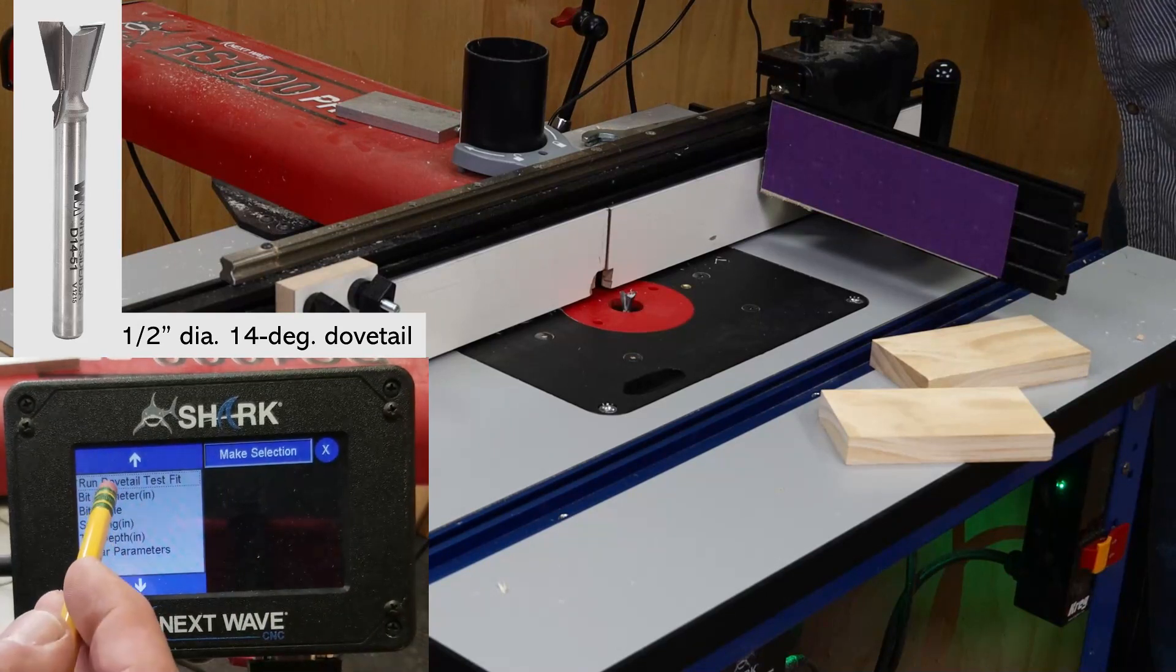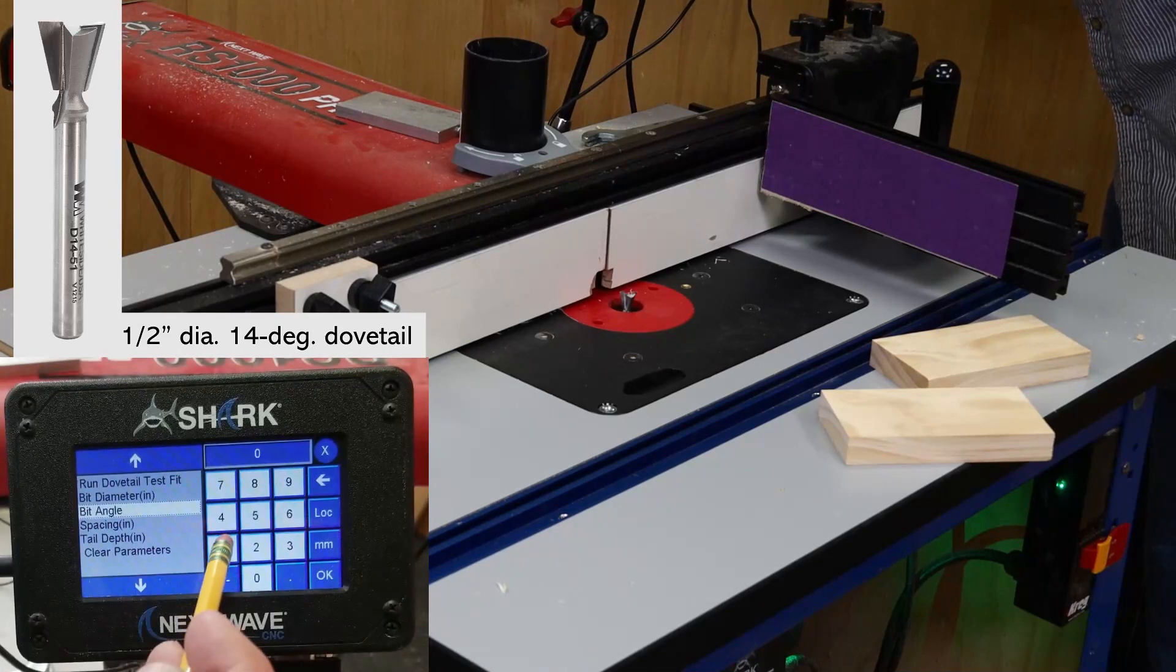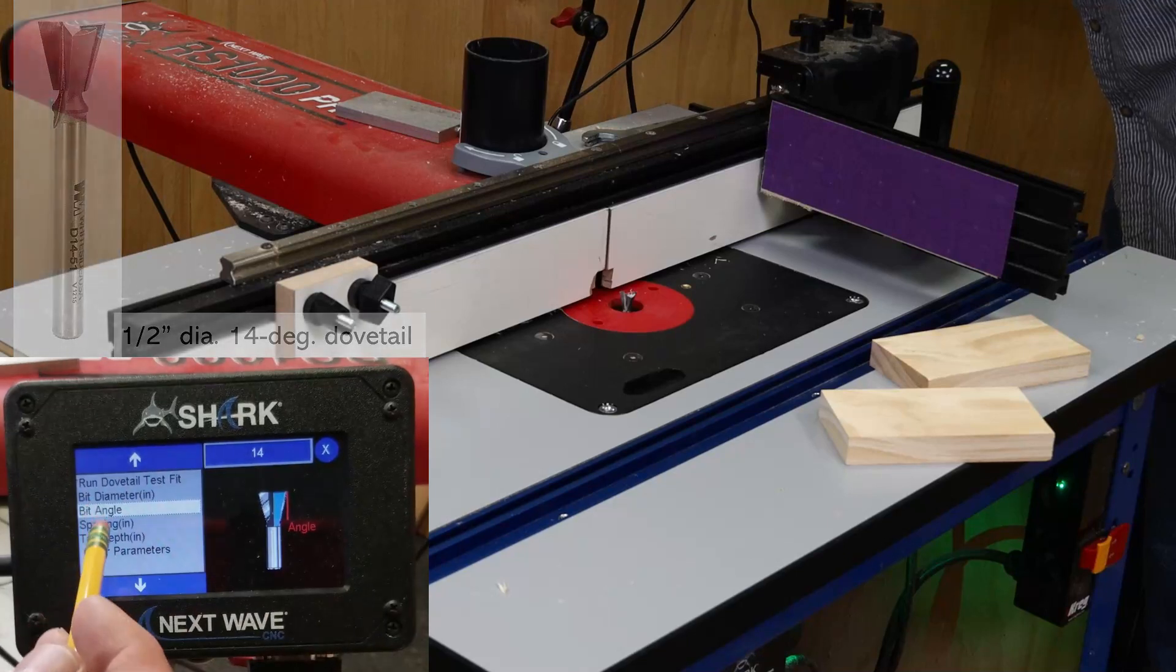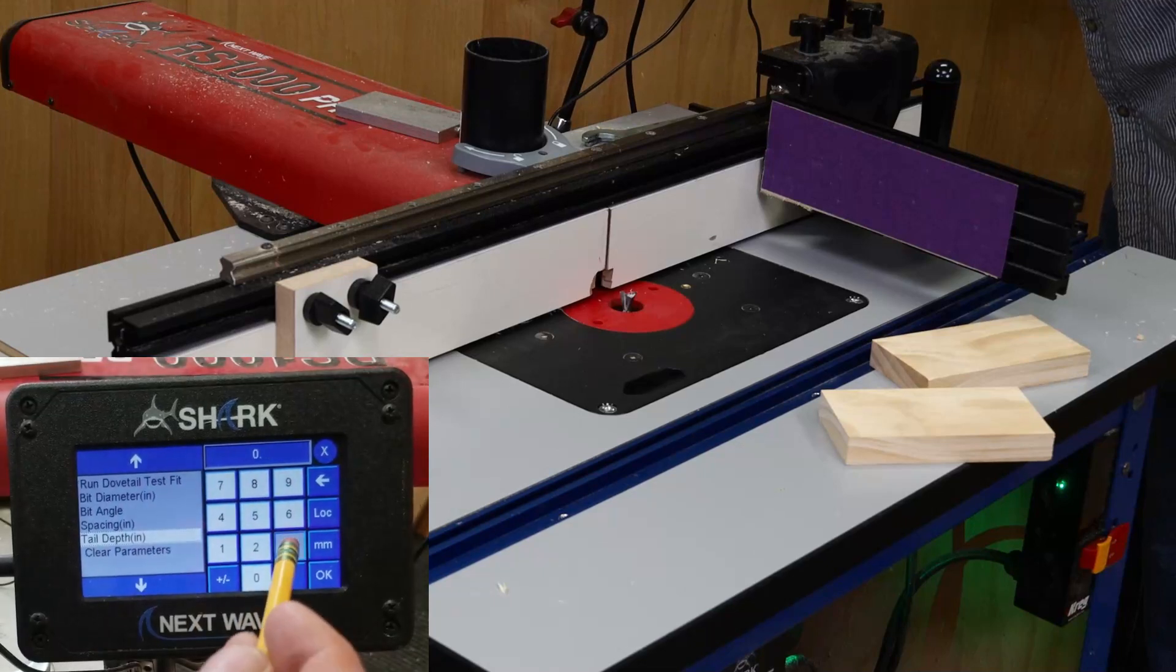I start by verifying the bit diameter, and then enter the bit angle, which is 14 degrees for the bit I'm using. Next, I set up the tail depth. This should be the same as you want for your final project.